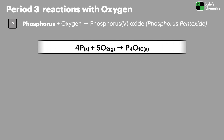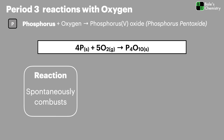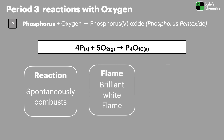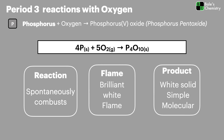Phosphorus burns in oxygen to produce phosphorus pentoxide, or phosphorus(V) oxide. The formula P4O10 is really worth learning — it's a very common exam question and almost impossible to answer without knowing it. This reaction happens spontaneously, meaning phosphorus will burn on its own when exposed to oxygen. It burns with a brilliant white flame and produces a white solid with a simple molecular structure.